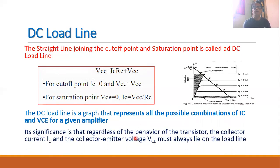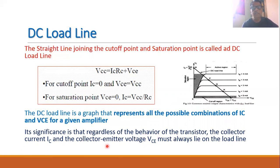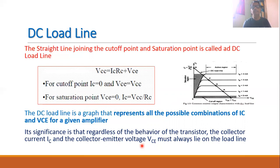In the case of a transistor amplifier, the DC load line is very important because regardless of the behavior of the transistor, the collector current IC and the collector-to-emitter voltage VCE will always lie on the DC load line. There are no other possible values for IC and VCE — all values will be on the load line.